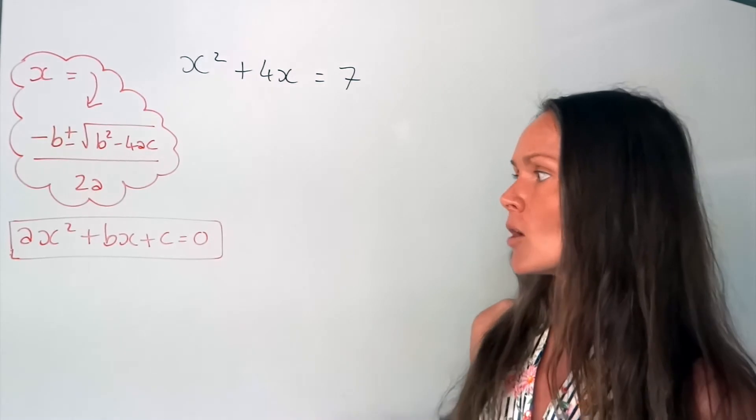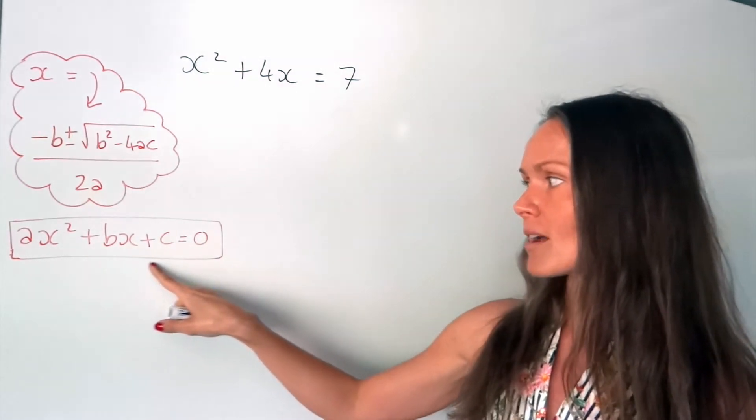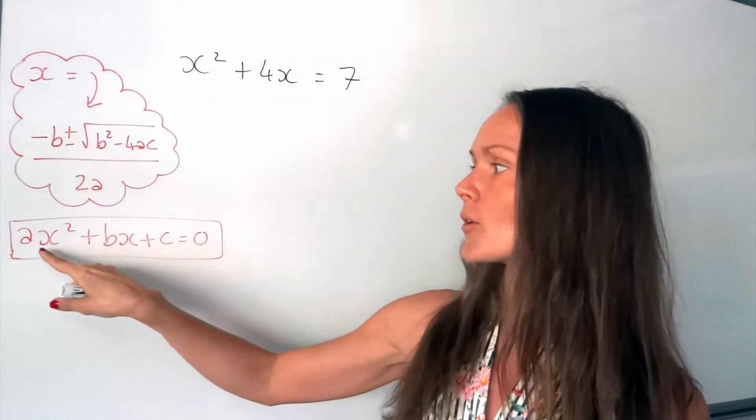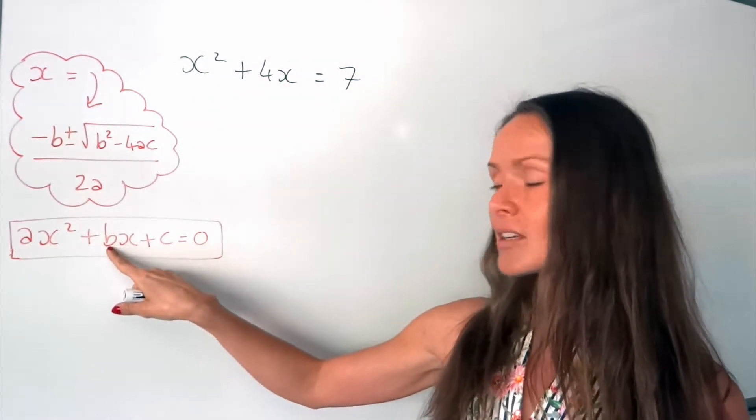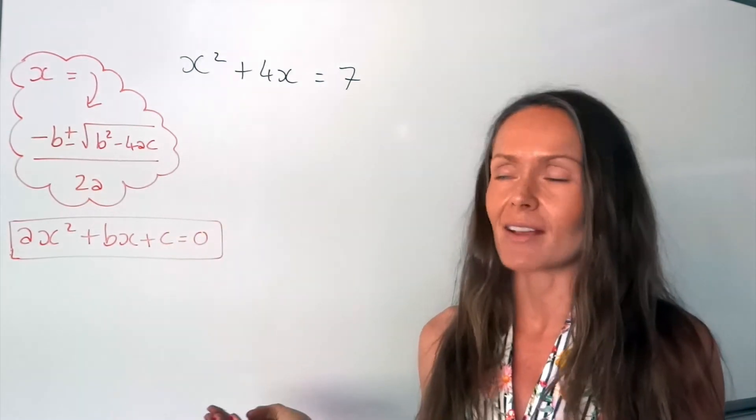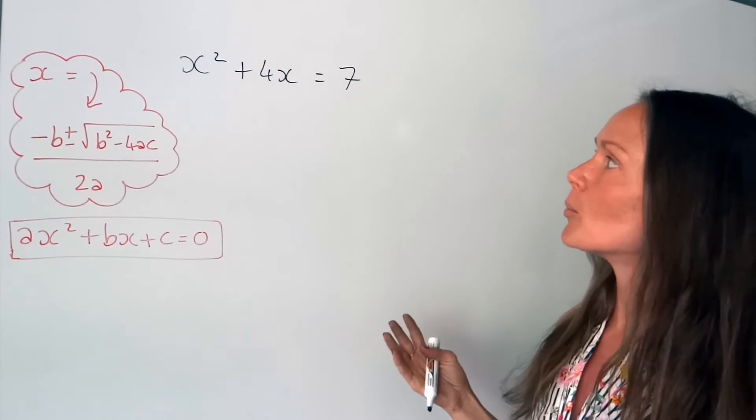So a, b and c, well if the equation is organized like this, so it equals 0, a is just the number that's in front of the x squared, b is the number in front of the x and c is just the number by itself, so that isn't attached to an x. So if we look at this example here,